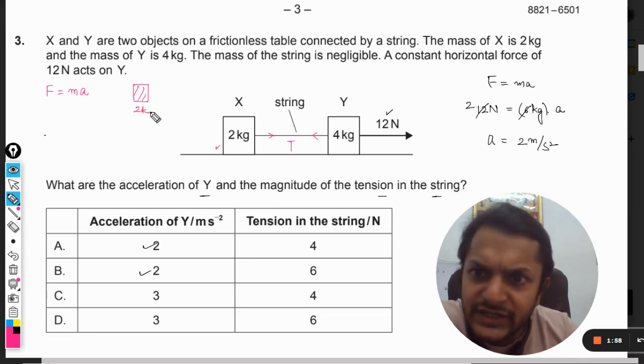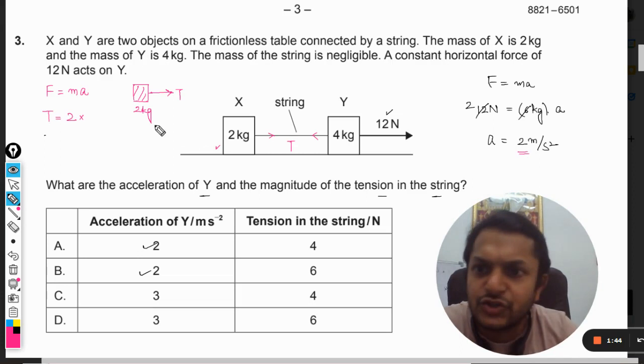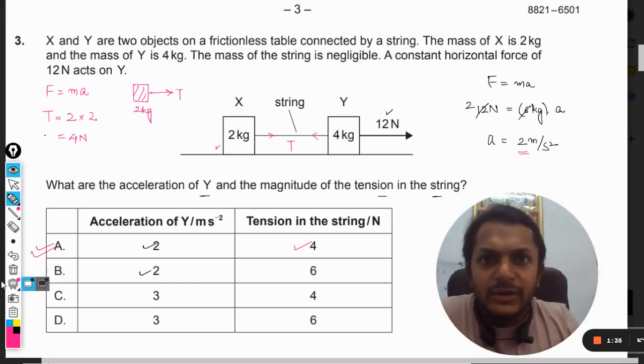This will be 2 kg. There is only one force that is acting, and that is T. This is the mass 2. So T is equal to 2 into the acceleration, which we have already found, and it is 2 meter per second square. So it will be 4 newton. So our answer will be A for sure.